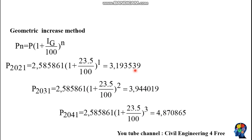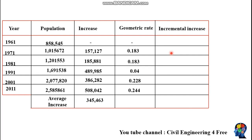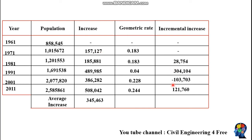Using the incremental increase method, the first row value will be zero since no prior data exists. The second row is also zero since there is no increase between those rows. For 1981, the incremental increase is calculated by subtracting the second value from the first: 185,881 minus 157,127. In similar fashion, fill the rest of the values. The average of these gives the average increment y, which equals 87,729.